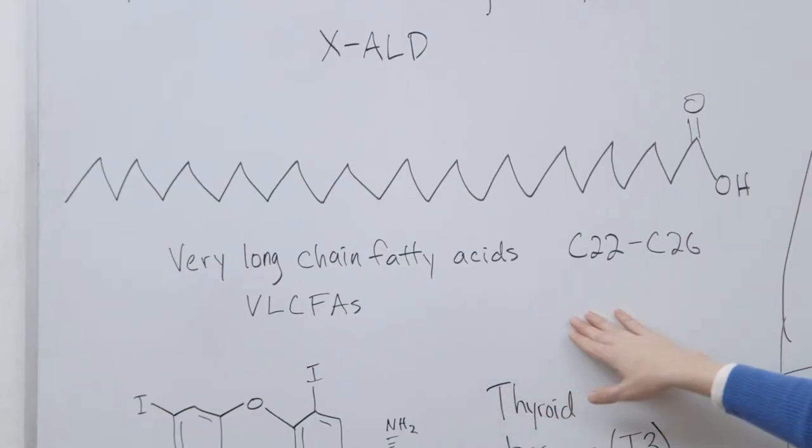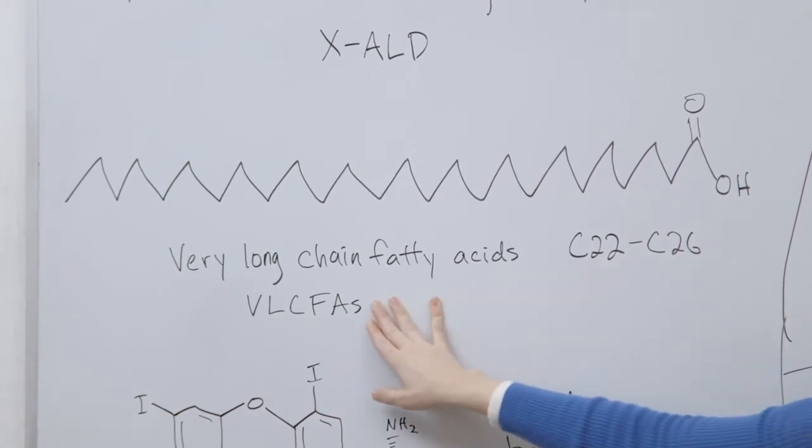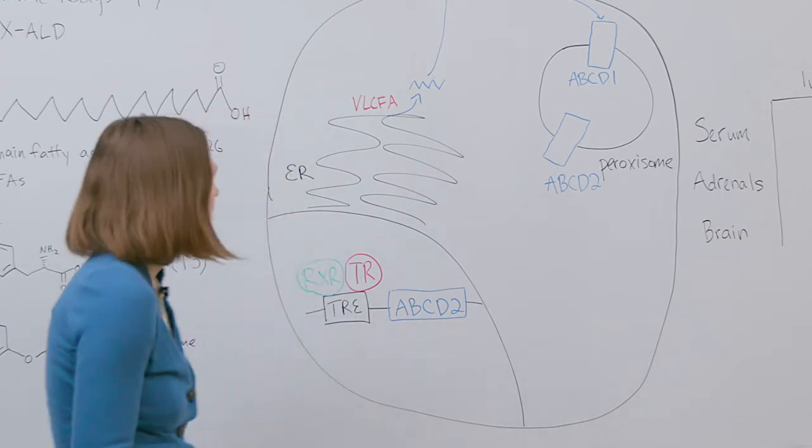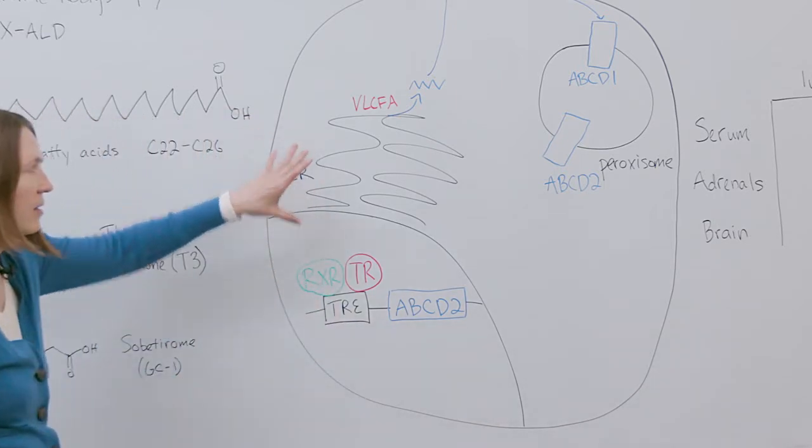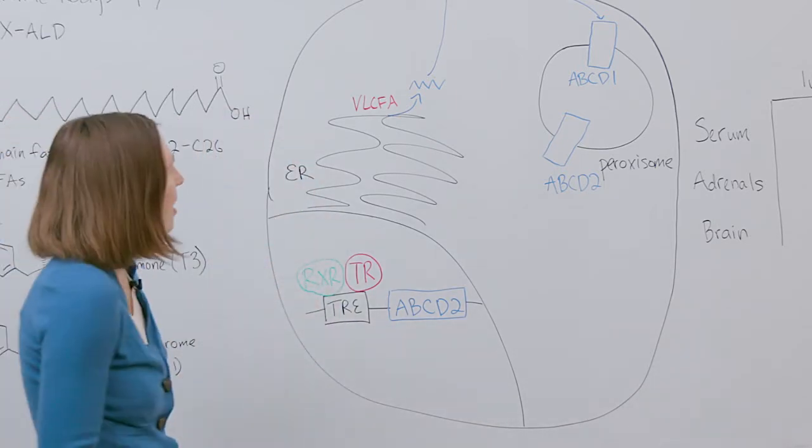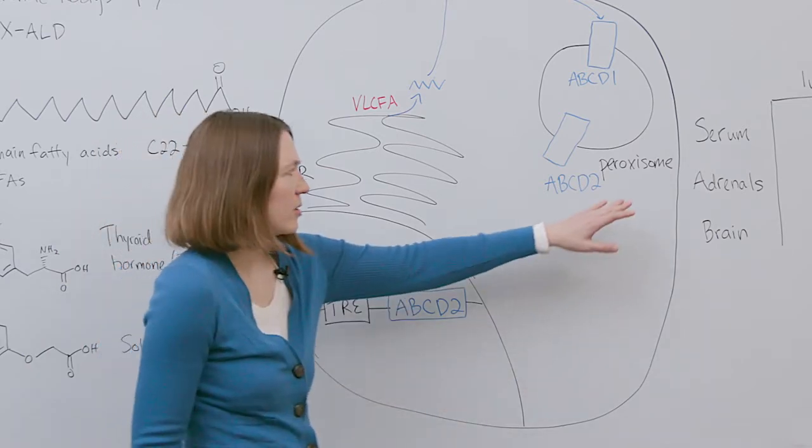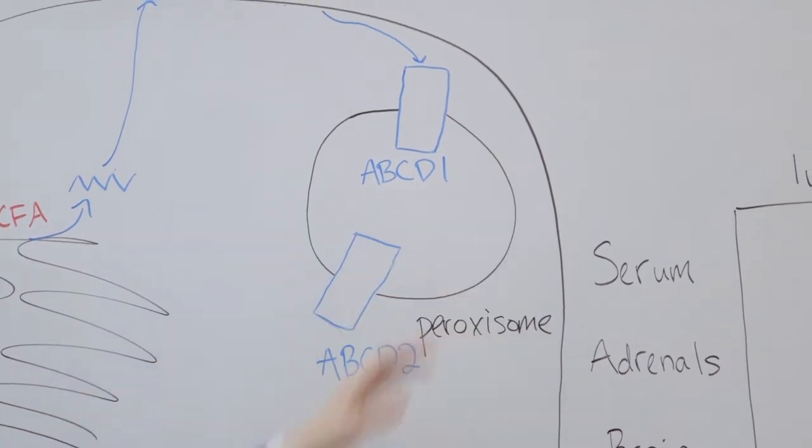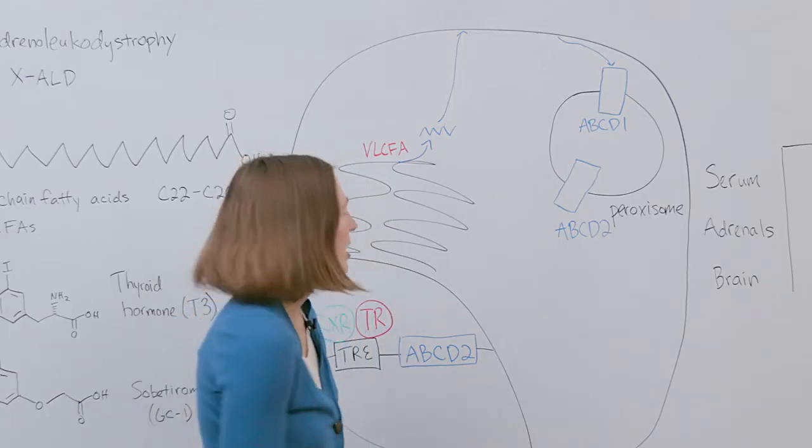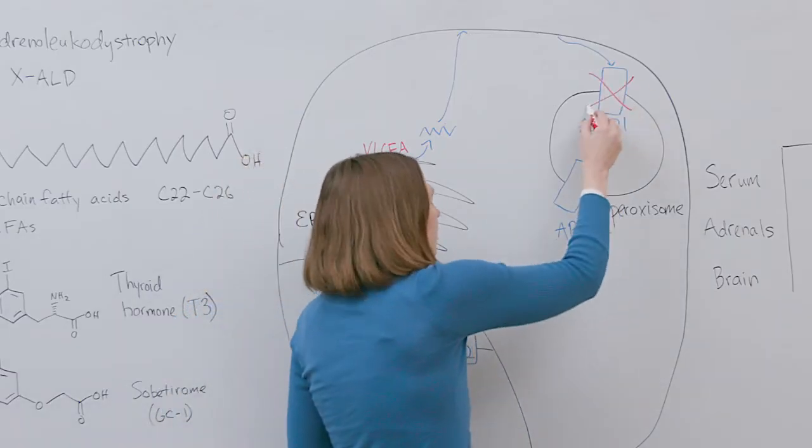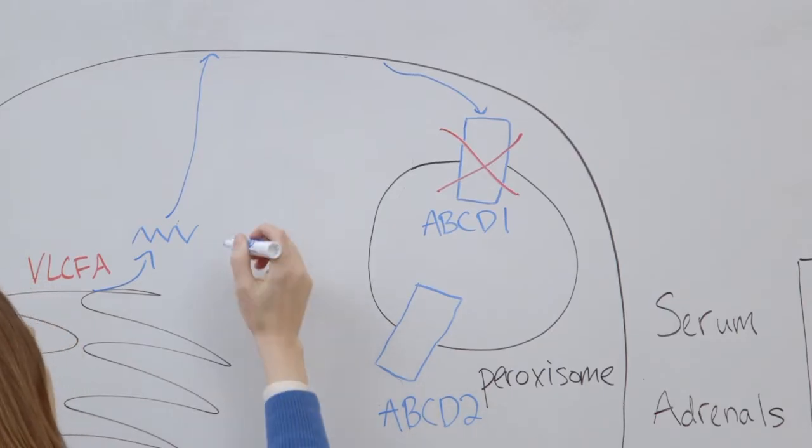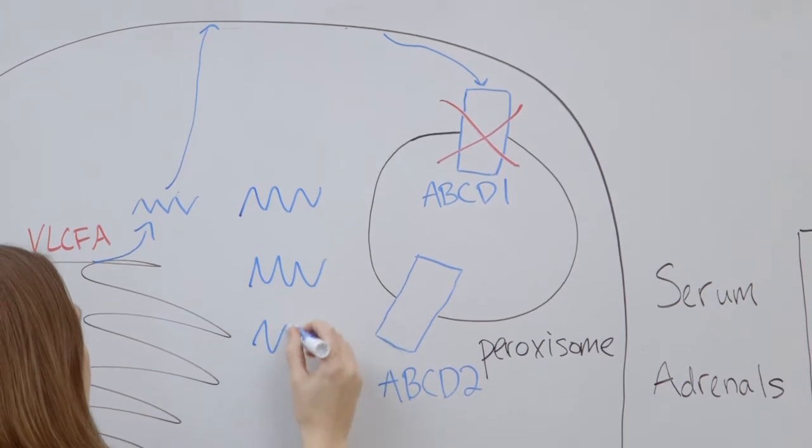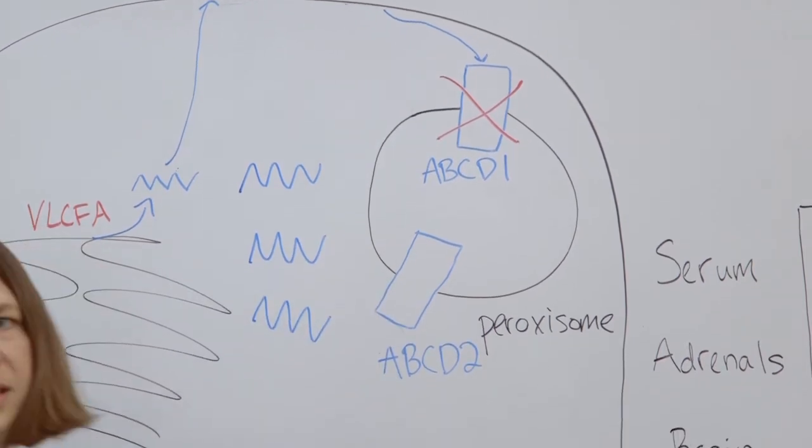XALD is caused by an accumulation of very long chain fatty acids abbreviated VLCFAs. VLCFAs are produced in the ER of the cell like other fatty acids. However uniquely they are degraded in the peroxisome with the help of a transporter called ABCD1. Patients with XALD have mutations in ABCD1 and this leads to an accumulation of very long chain fatty acids in the cell leading to the disease symptoms.